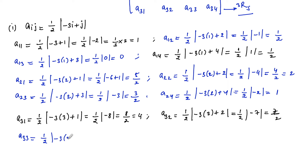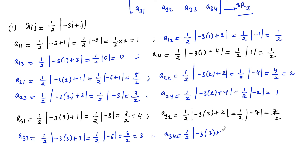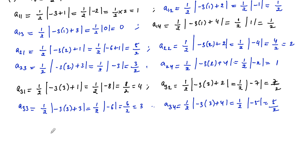A33 = (1/2)|−9 + 3| = (1/2)×6 = 3. And A34 = (1/2)|−3×3 + 4| = (1/2)|−9 + 4| = (1/2)|−5| = 5/2. Therefore, matrix A is the 3 by 4 matrix: [1, 1/2, 0, 1/2; 5/2, 2, 3/2, 1; 4, 7/2, 3, 5/2].